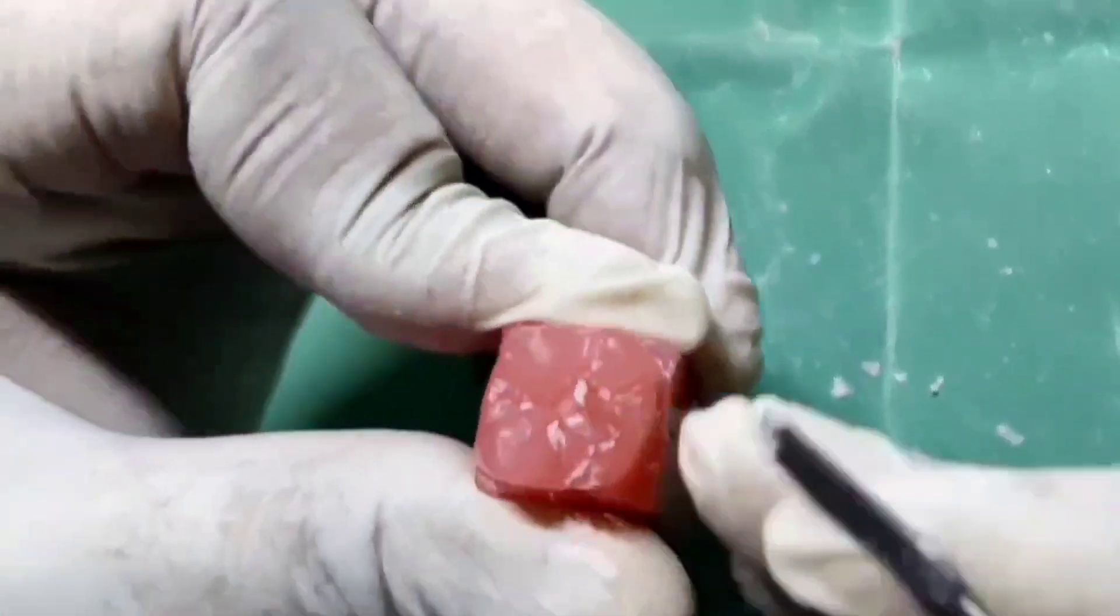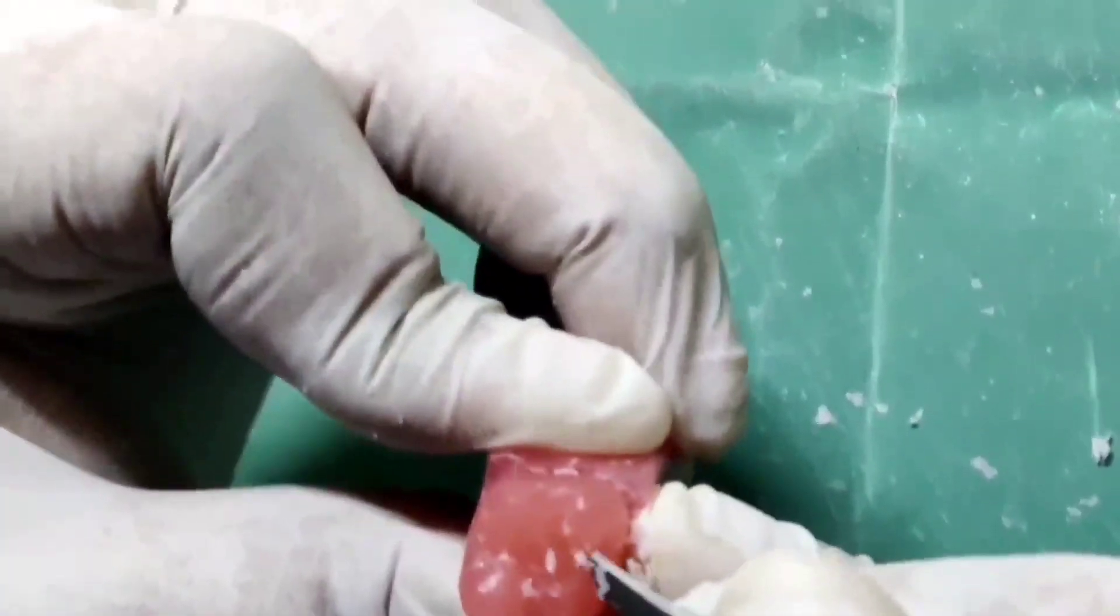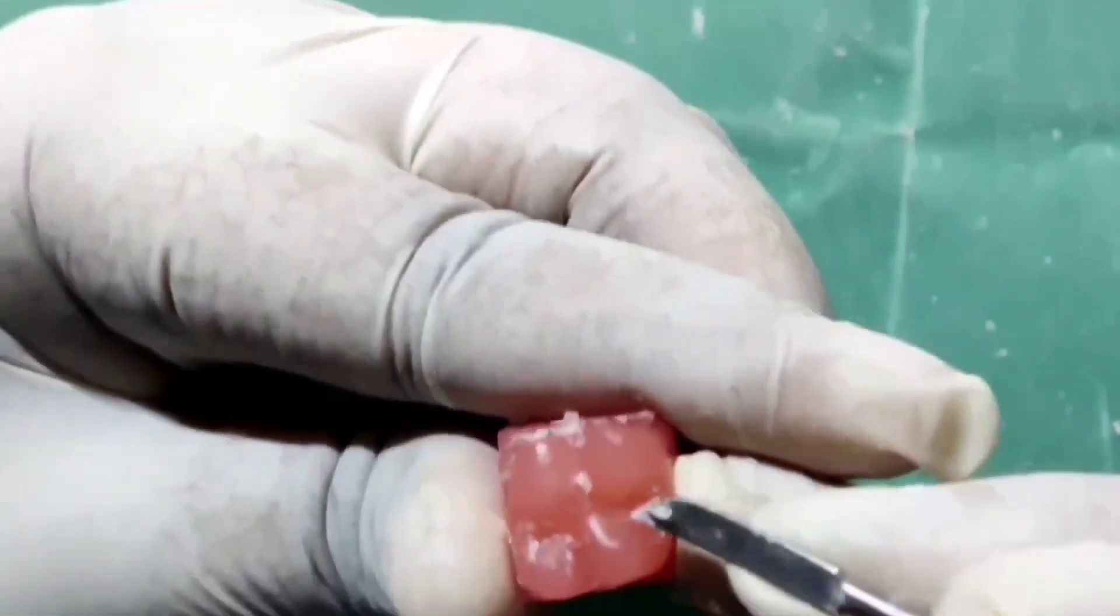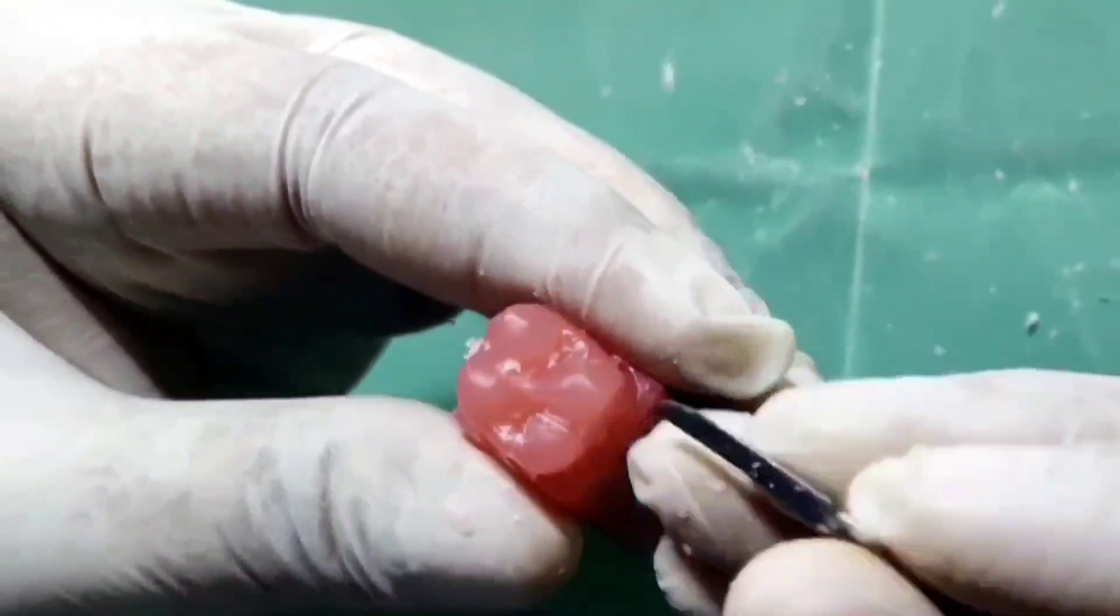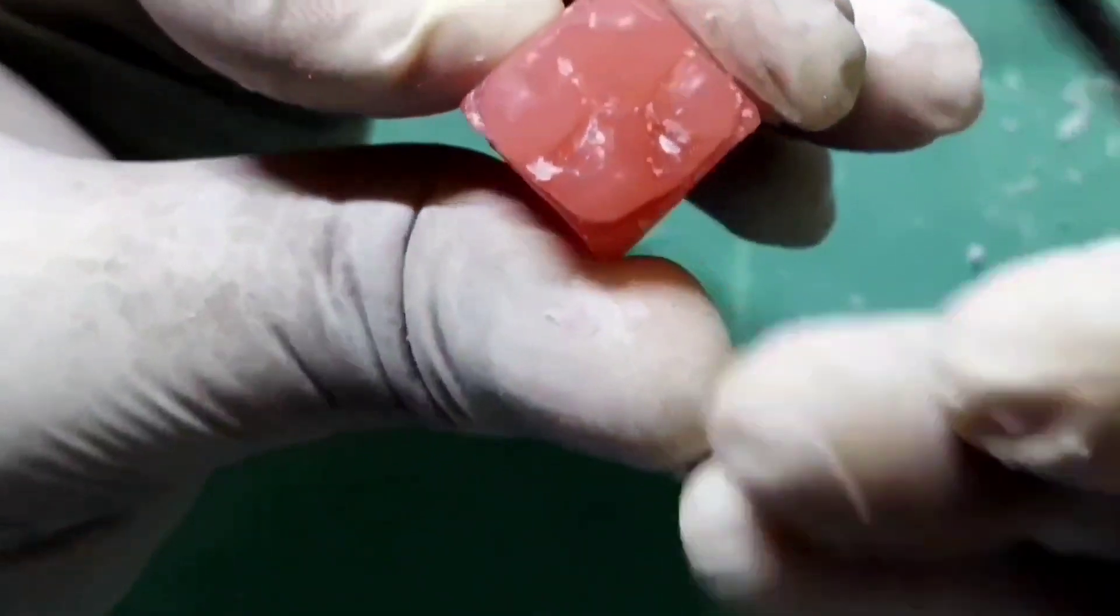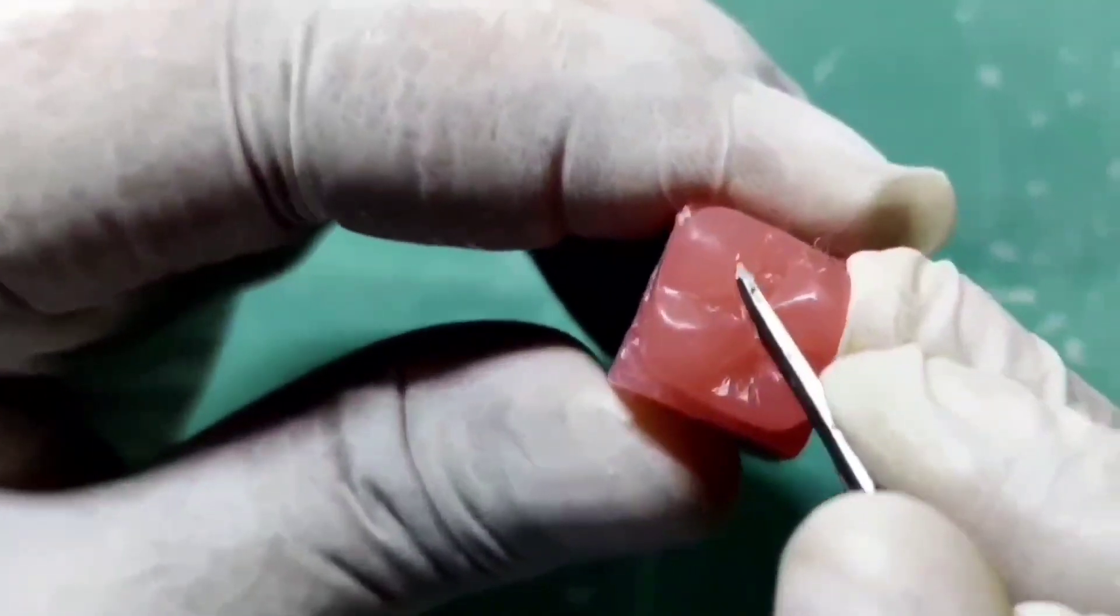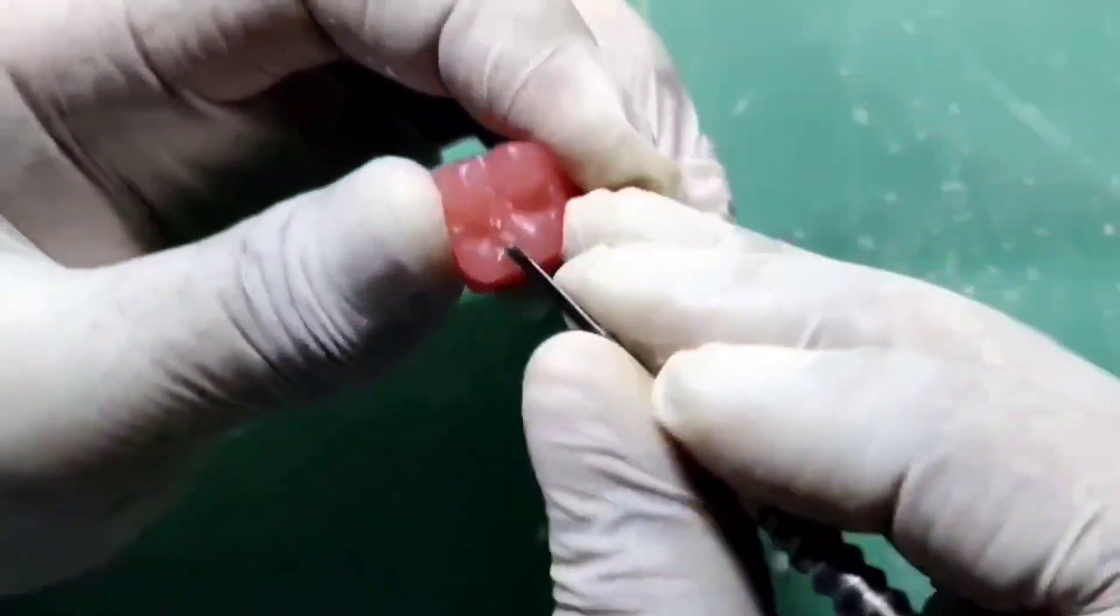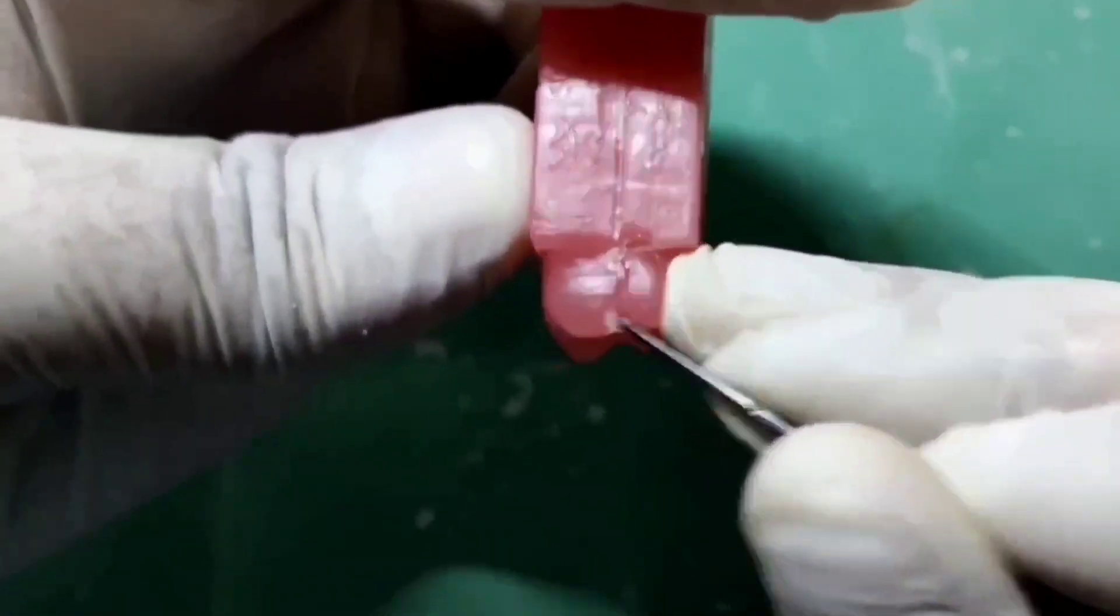Start carving the oblique ridge that crosses the occlusal surface obliquely. It is the union of triangular ridge of the distobuccal cusp and the distal ridge. Make central transverse groove. Make the buccal and lingual developmental grooves.